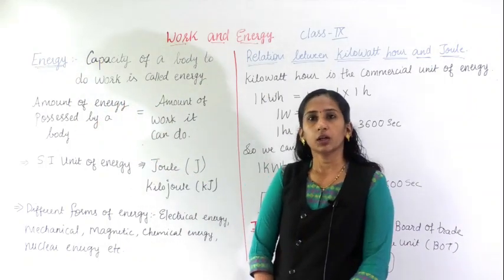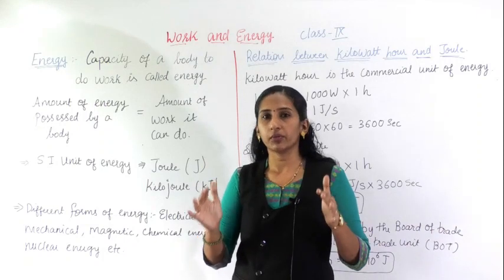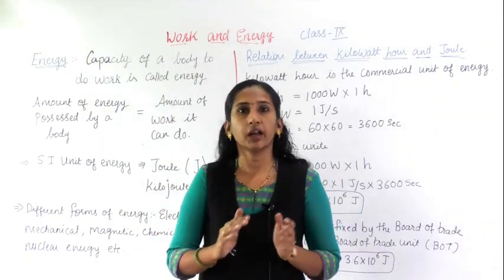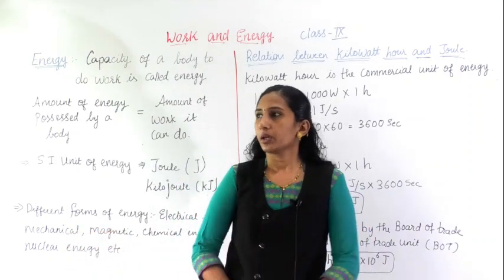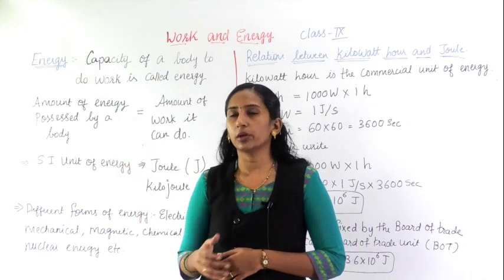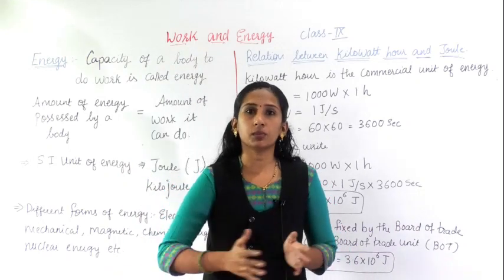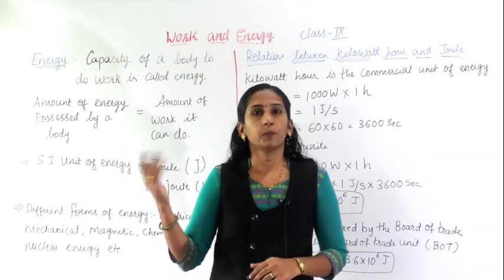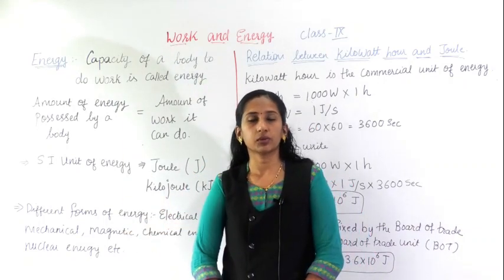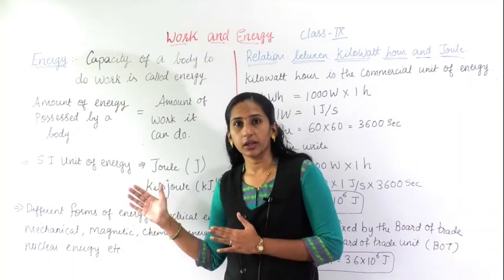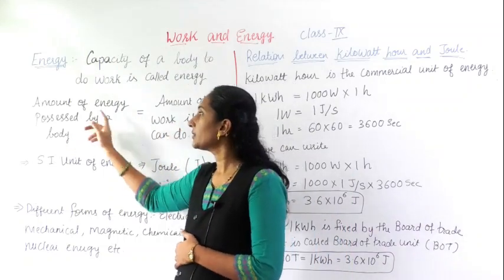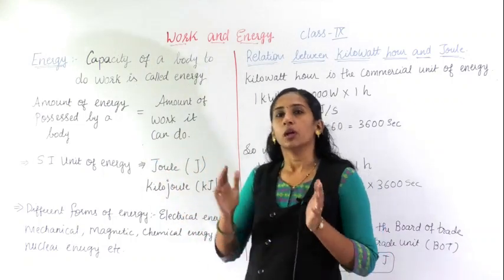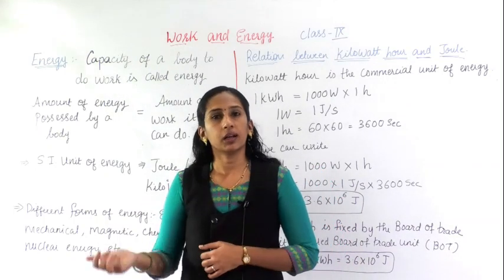The amount of energy possessed by a body is equal to the amount of work done. If a body has less energy, it cannot do big work. Consider wind blowing — normal wind blows slowly, but during rainy season you can see how much energy the wind has. More energy means more work can be done; less energy means less work will be done.